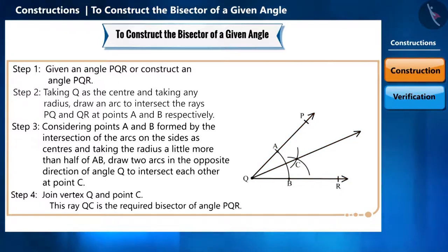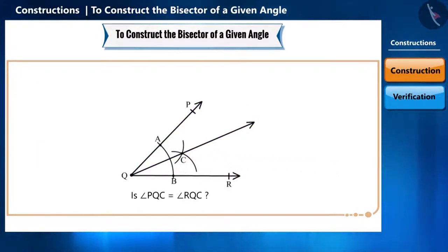But through this construction, did the bisection of angle PQR actually happen? In other words, will angle PQC and angle RQC be equal? Let us see the proof for this.